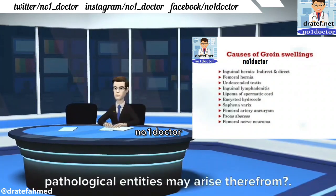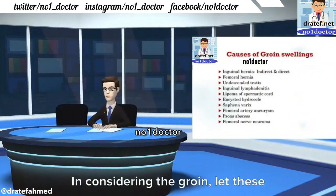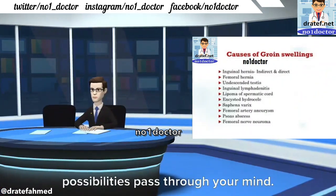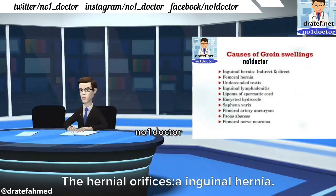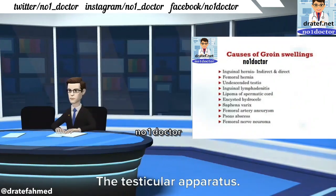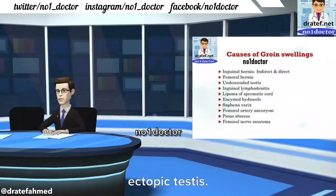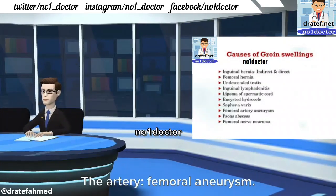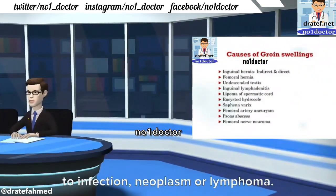One: the hernial orifices — (a) inguinal hernia, (b) femoral hernia. Two: the testicular apparatus — (a) hydrocele of the cord, (b) ectopic testes. Three: the veins — saphena varix. Four: the artery — femoral aneurysm. Five: the lymph nodes — lymphadenopathy due to infection, neoplasm, or lymphoma.